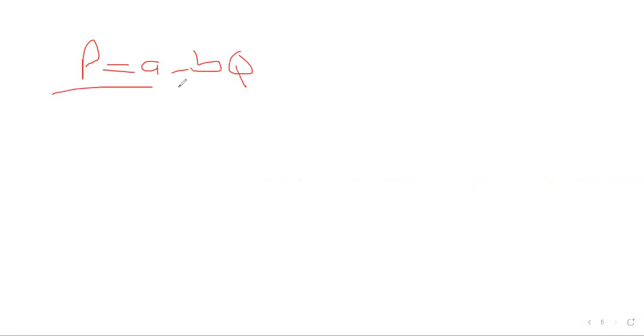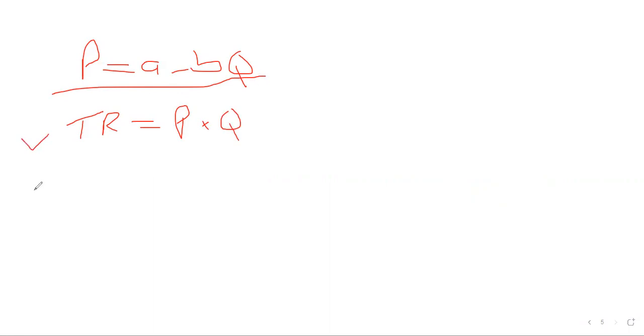So I'm still on the demand function. The demand function is: price equals A minus 3Q. From this formula we can get 5 things. Number one, TR is the total revenue — you get price and quantity. Number two, average revenue is when we divide the total revenue by quantity.